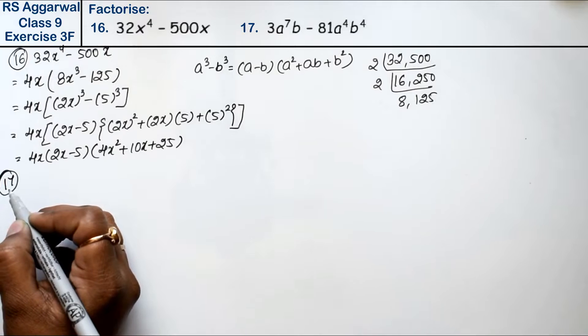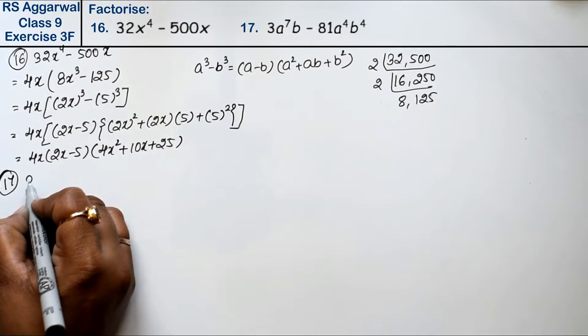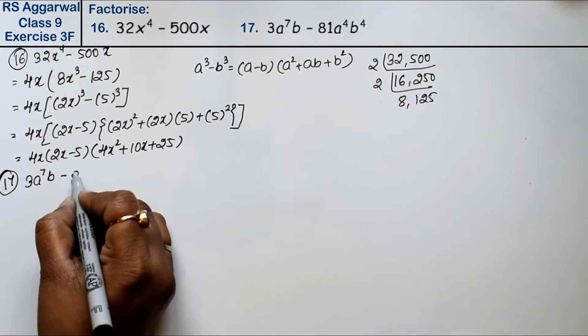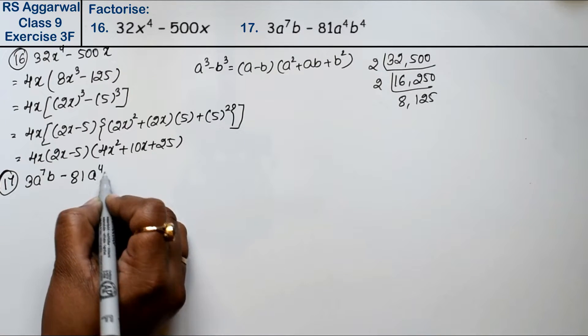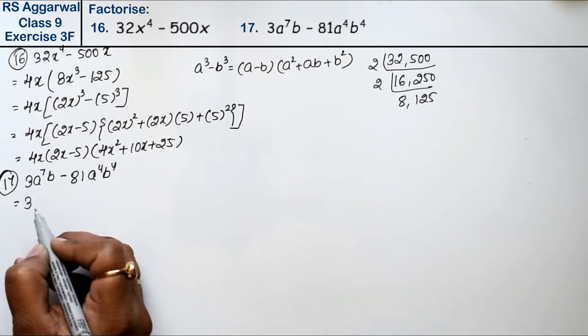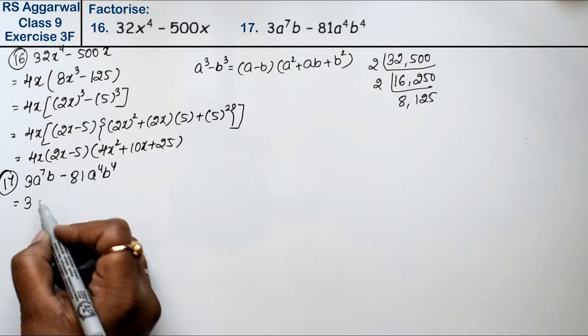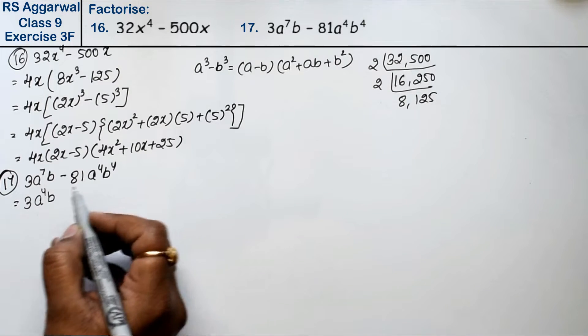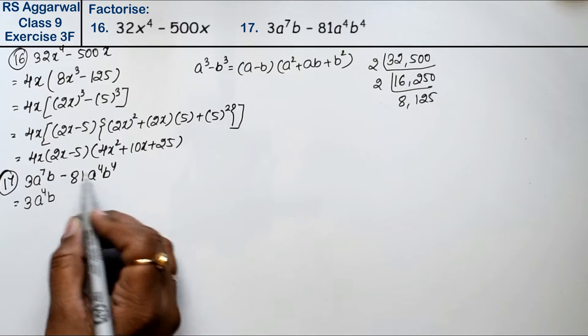Question number 17 is 3a^7b minus 81a^4b^4. Friends, here we can take out 3 as common, a^4 as common, and b as common. Here it's 1 and here it's 4.